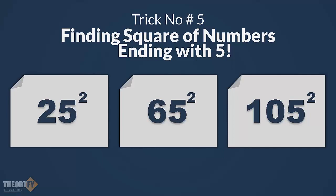For example, how to find the square of 25, 65, 105. The key thing is every number has 5 as the unit digit.